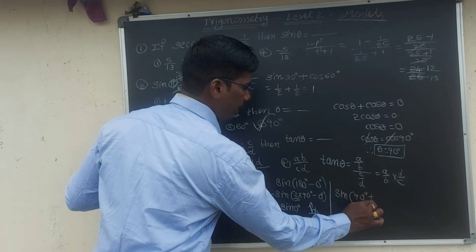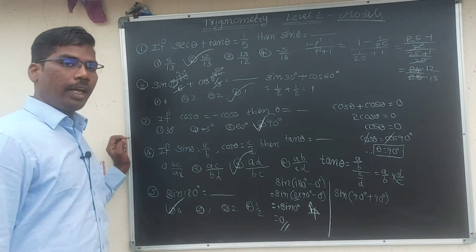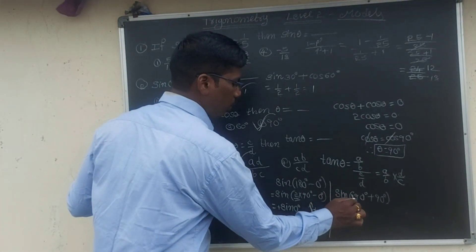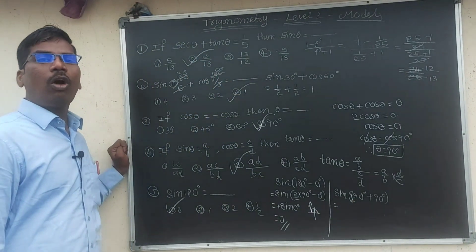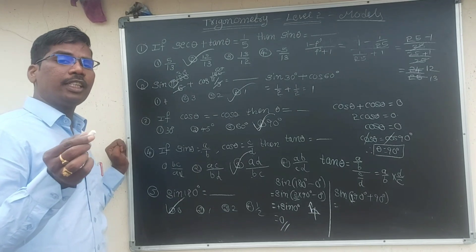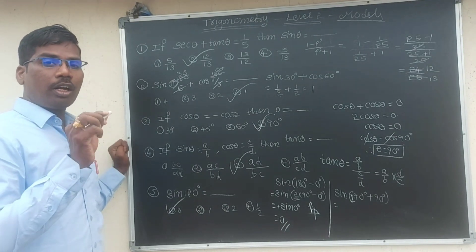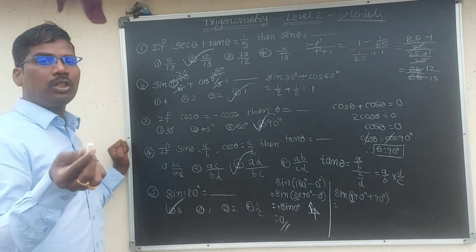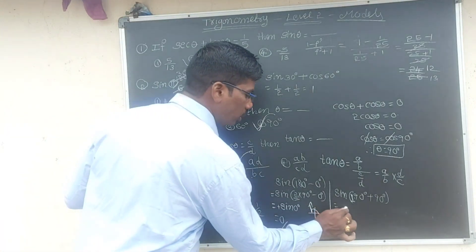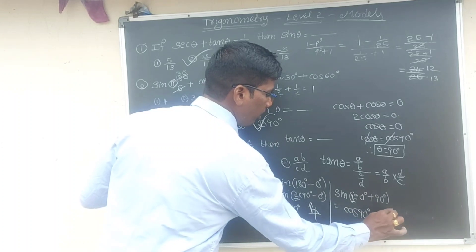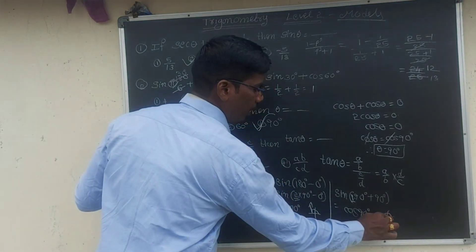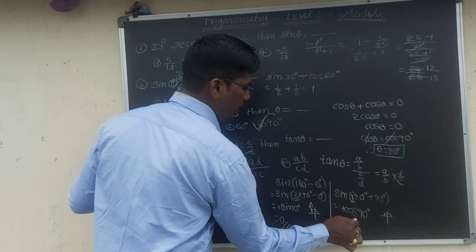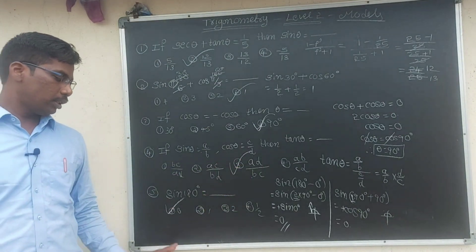Sin 90 degrees plus 90 degrees gives us 1. Here we are in the second quadrant where sin is positive. Cos 90 degrees is 0. So the answer is 0.